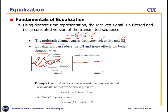In a wireless environment with one direct path and one multipath, the received signal r_k = b_1 · s_k + b_2 · s_{k-1} — a direct component plus a delayed version. The channel response in this two-path case has two impulse components: b_1 · delta_k and b_2 · delta_{k-1}, where delta_{k-1} is delayed by one time unit. So we have a two-path channel with two impulse responses.